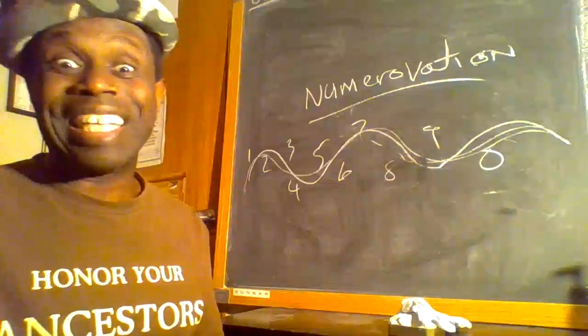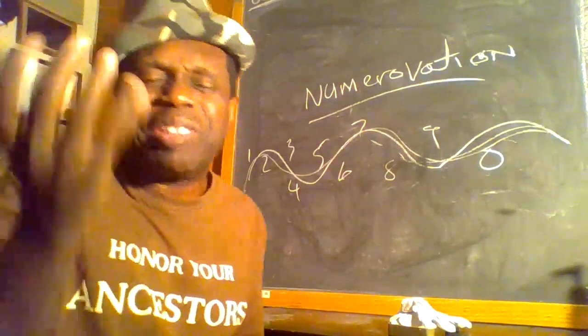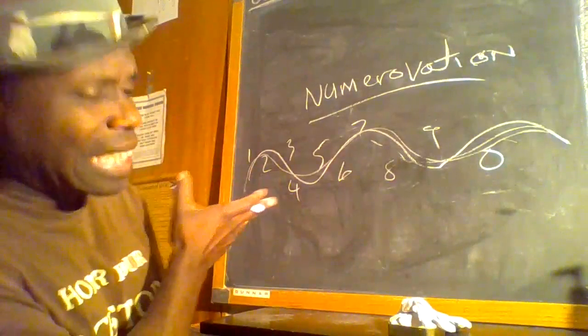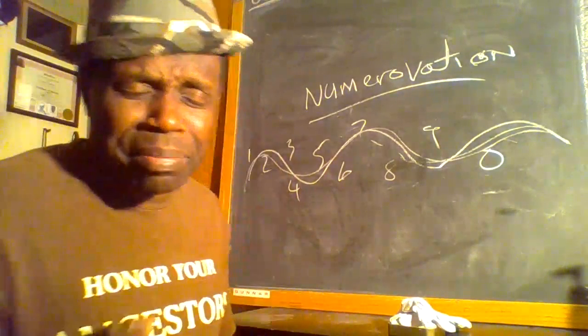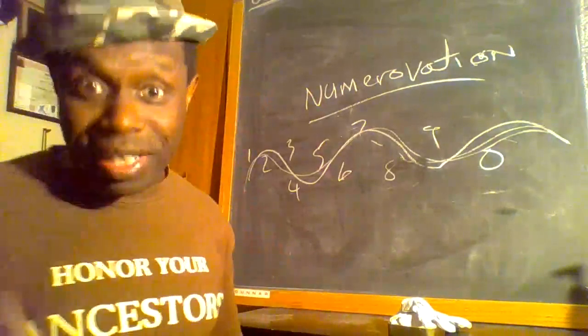And then eight we know is the money number. Yes, money and finance are good for you. Material accomplishments and multiple levels of it. And then we know that the number nine is the humanitarian number on one side, the selfless number and the selfless service on one side, but also can be the warring number, the military number on the other side.